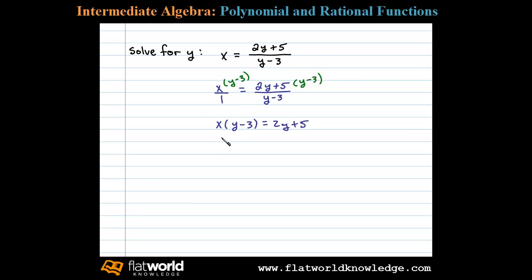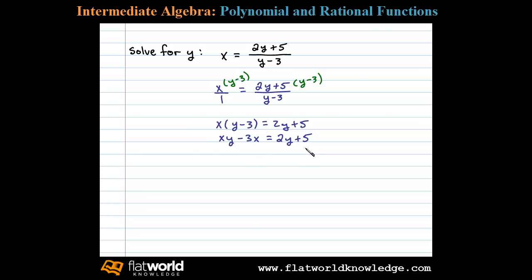At this point let's go ahead and distribute the x, and that'll leave us with xy minus 3x equals 2y plus 5. Now we want to get all the terms involving y on one side and everything else on the other. To do that, we'll subtract 2y from both sides and at the same time add 3x to both sides.